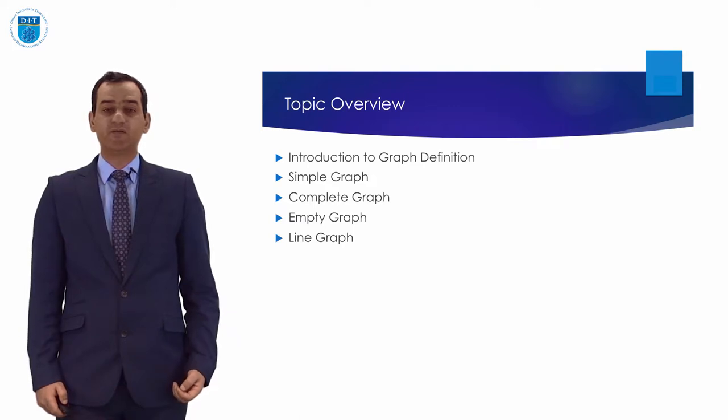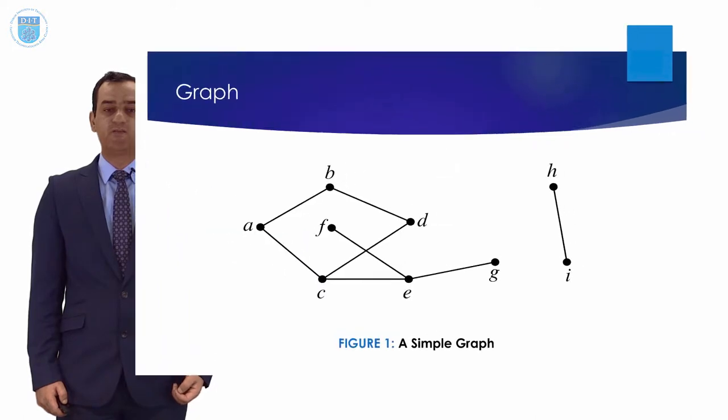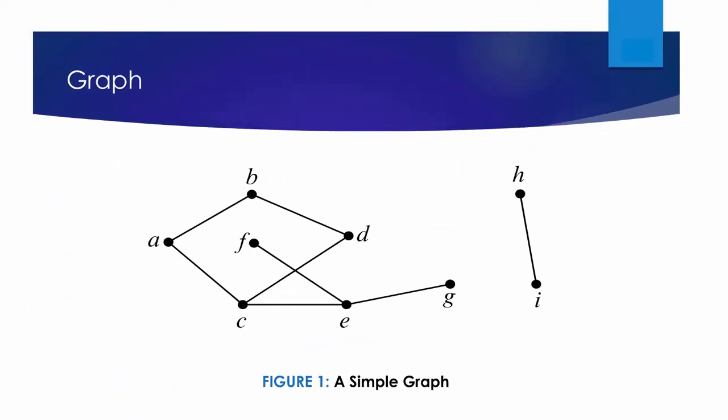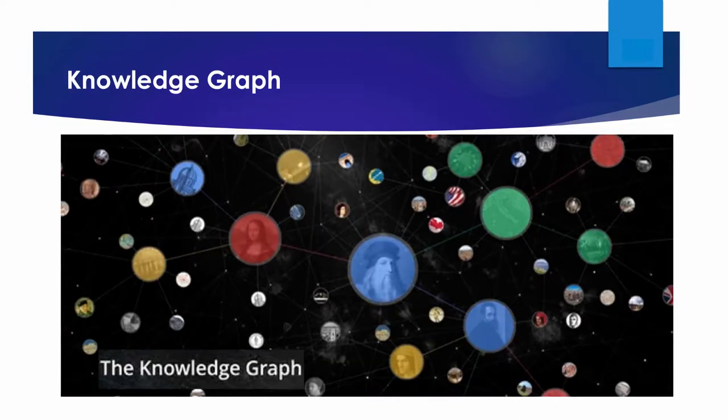Informally, a graph is a bunch of dots and lines where the lines connect some pairs of dots. The following figure is an example of a graph with nine nodes and eight edges. Graphs are ubiquitous in computer science because they provide a handy way to represent relationships between pairs of objects.